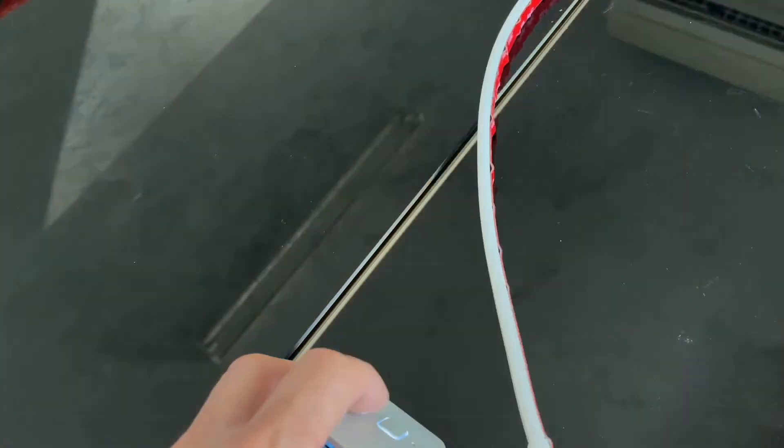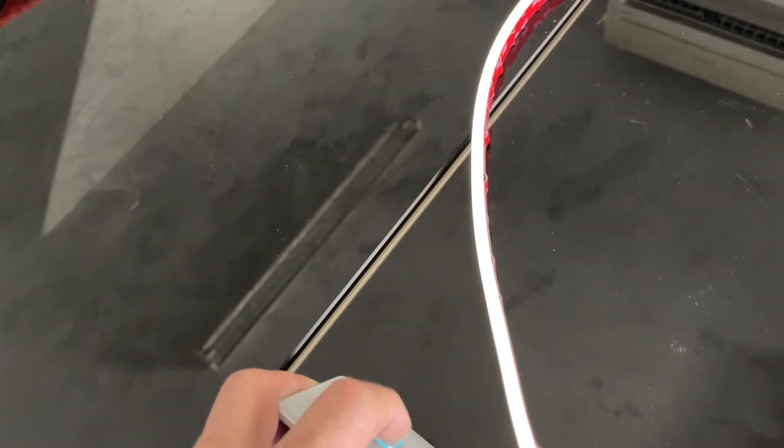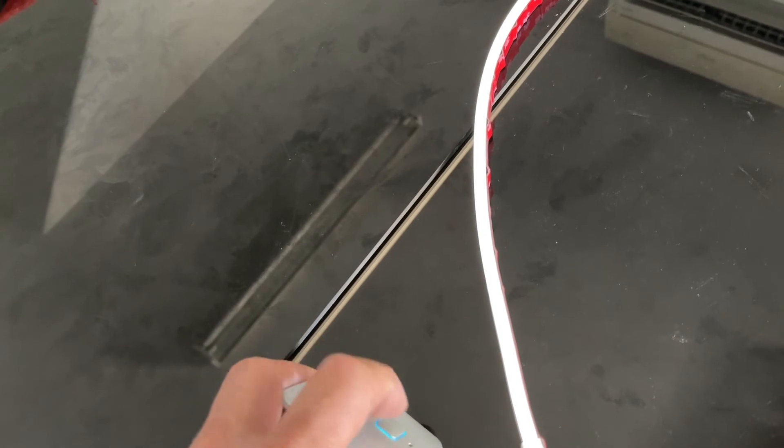And totally dimmable. So all our lights are dimmable. There it is dimming down and we're dimming on the positive. Look how low we can take that down. It's just a soft glow. I've been saying how good is that?